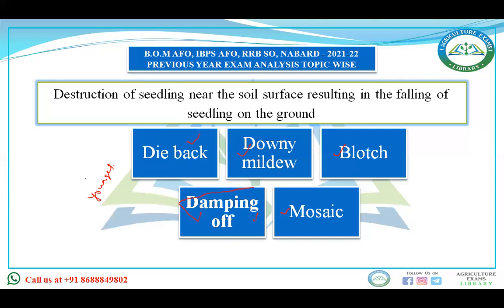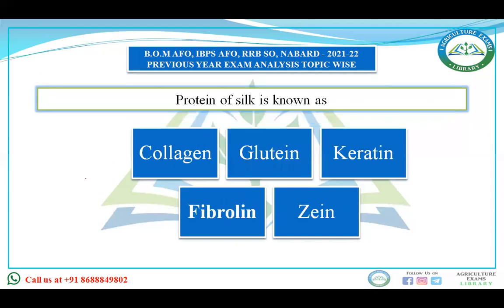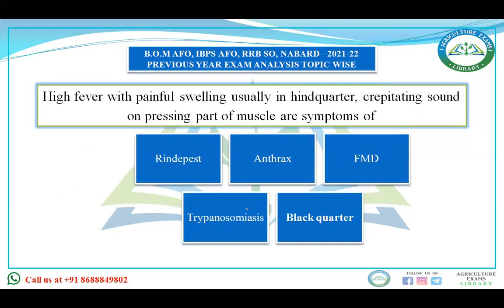Next: protein of silk is known as — collagen, gluten, keratin, fibrillin, or fibroin? You should also remember proteins of different crops: protein of maize is zein, protein of rice is oryzenin, and protein of wheat includes gluten. Keratin is present in hair and nails. The protein of silk is known as fibroin.